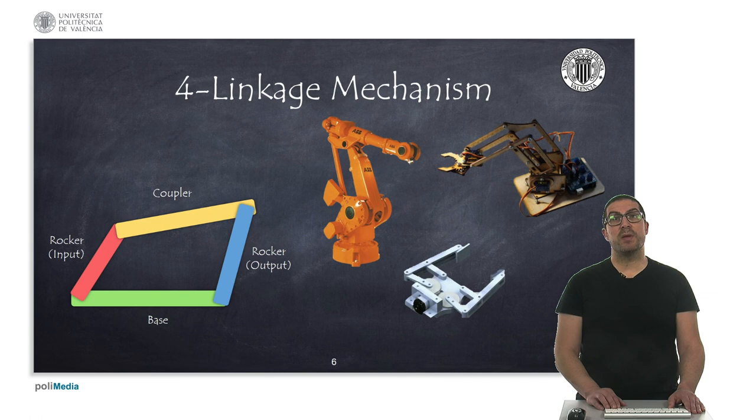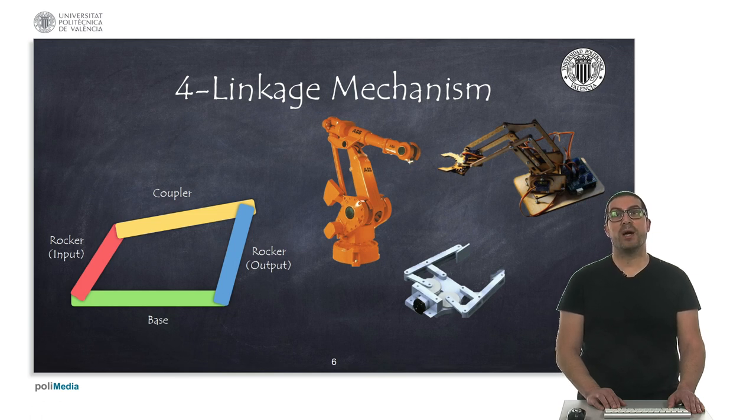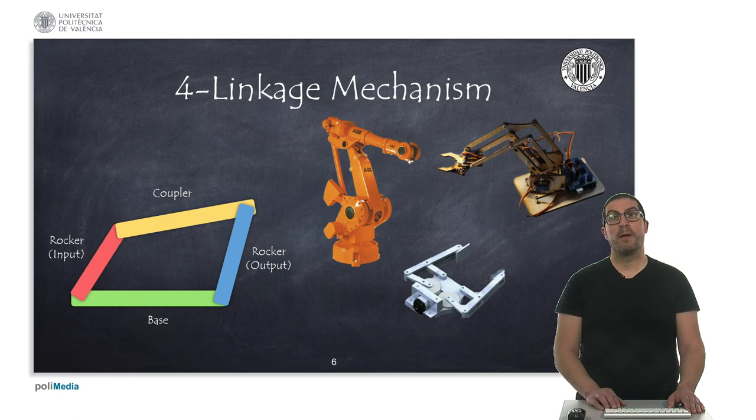The four linkage mechanism is one of the simplest closed kinematic chains and yet appears in many real-life applications. In robotics, we find this mechanism as part of the elements of a robot when we want to transform the rotation from one axis to another and usually the input and output links do not rotate completely, also known as rocker or crank, with limited range of movement. The bar joining both links is known as coupler, while the fixed bar is simply known as base.